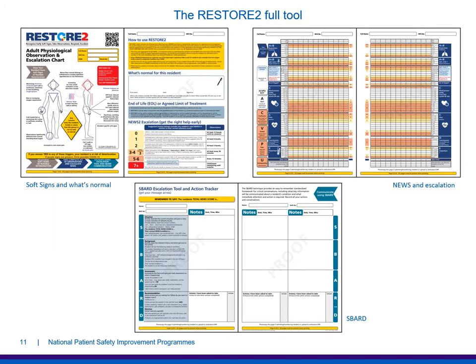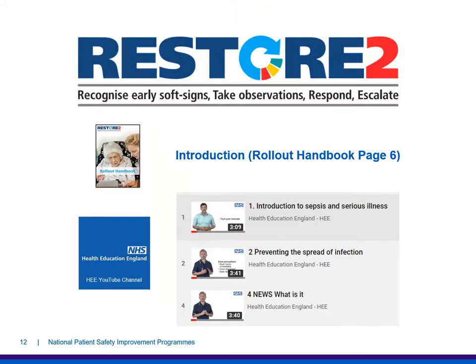This is what the full tool looks like: six pages of A4, starting with soft signs and what's normal and the escalation thresholds. The next two pages form the observation chart, and the final two pages are the SBARD escalation tool and action tracker. As we move through this presentation we will reference the appropriate pages in the rollout handbook. There are also a series of videos recorded and available on the Health Education England YouTube channel.